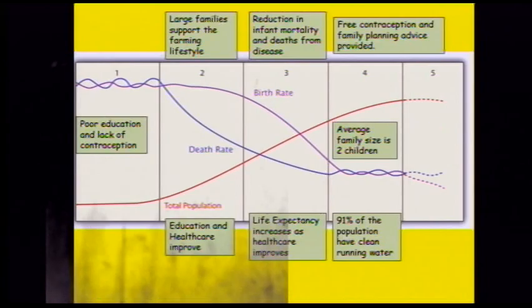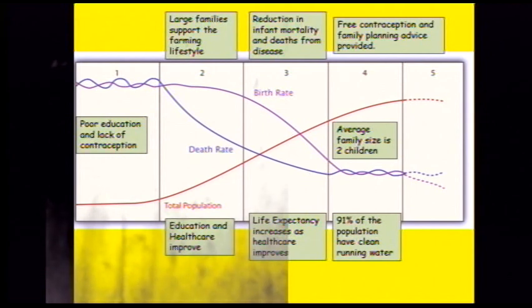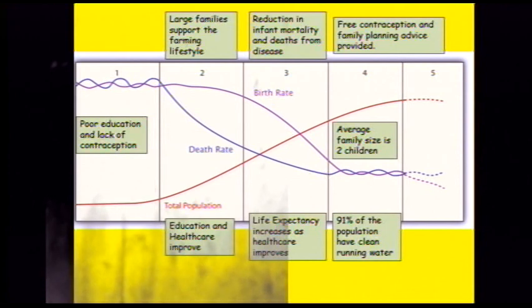If asked to explain what is happening at each stage: the birth rate is high in stage one because people want a lot of children to support the farming lifestyle and make money for their family. The death rate is high in stage one because people have poor education and there is a lack of contraception, so they're not aware they can control the number of children they have through family planning. The total population is very low in stage one because not many people are surviving — there's a very high death rate.